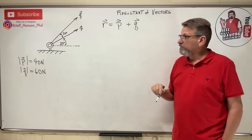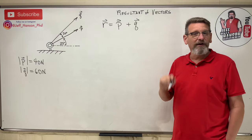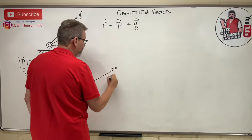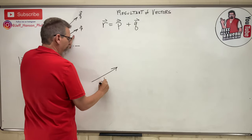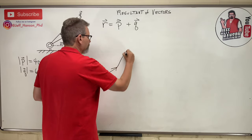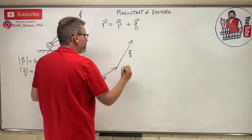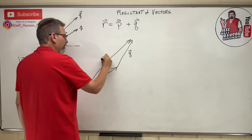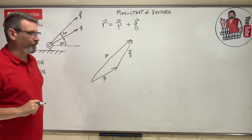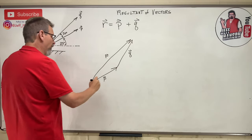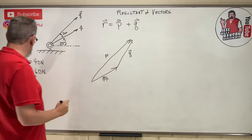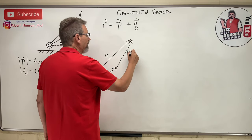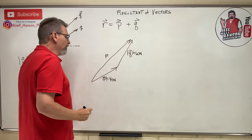How do we add two vectors together? The triangle rule — the tip-to-tail rule. Here's that first vector, vector P, and on the end of it is vector Q, tip to tail. That makes a very skinny little triangle, and we'll call this side R. We know this side is 40 Newtons and the other side is 60 Newtons.